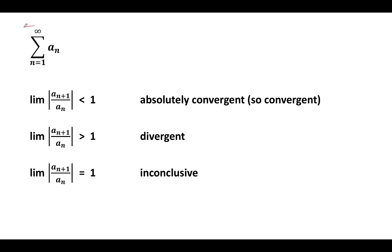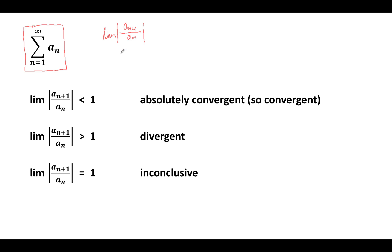Suppose we have the infinite series — a summation from n equals 1 to infinity of elements a_n. We look at the ratio of two consecutive elements, a_{n+1} and a_n. We take the absolute value of this quantity and then take the limit as n goes to infinity. Suppose this limit exists as a real number or is equal to infinity — so potentially anything between 0 and infinity.